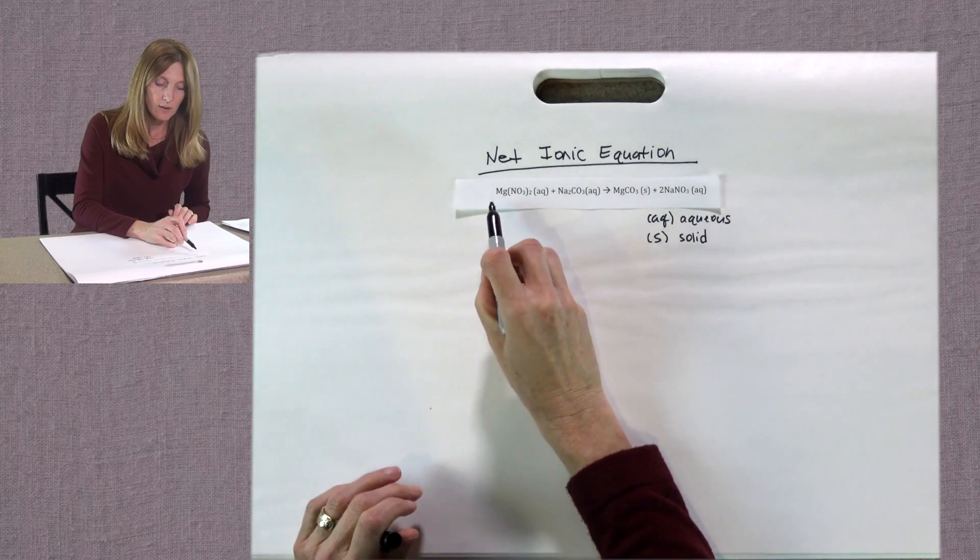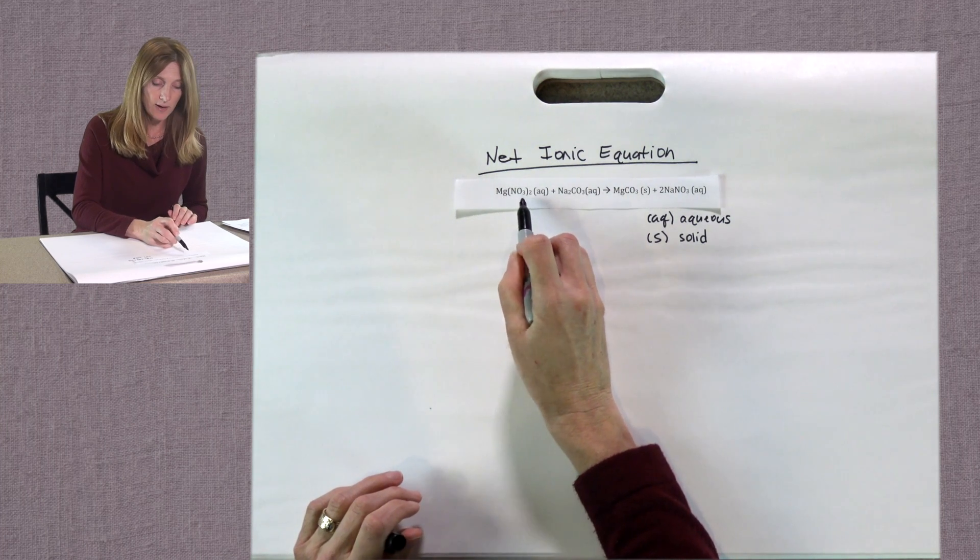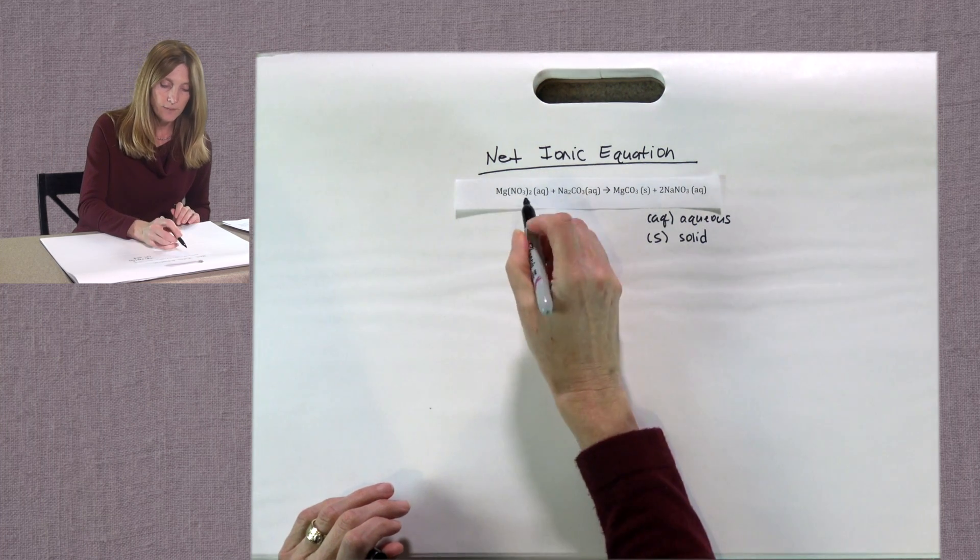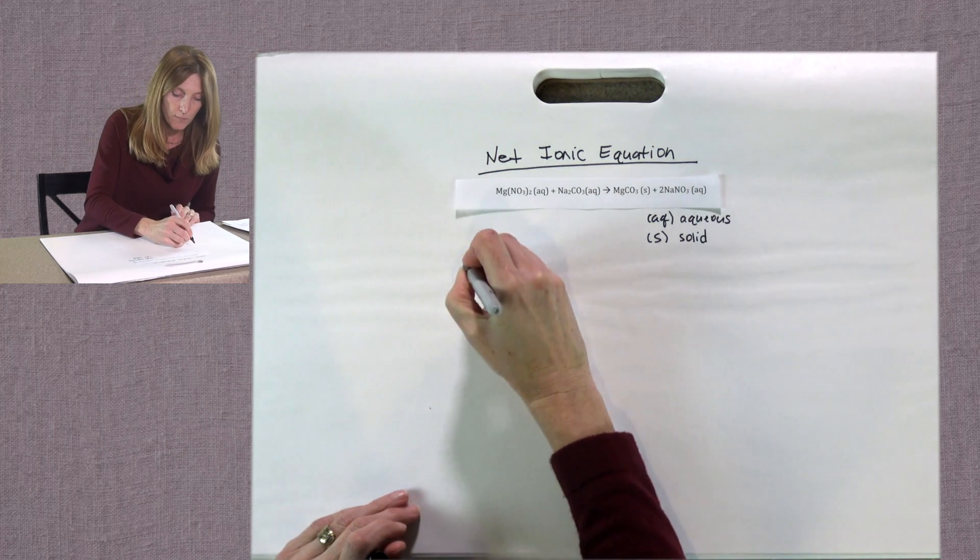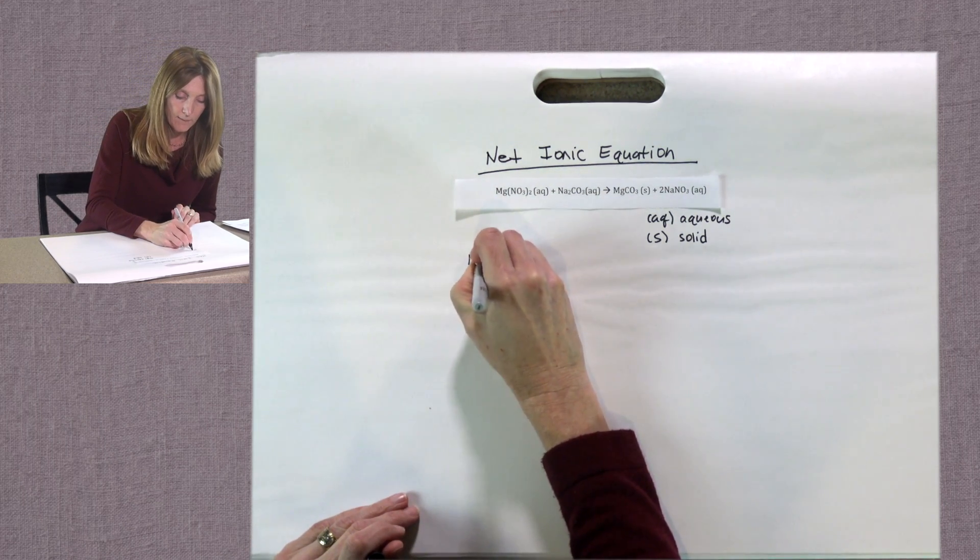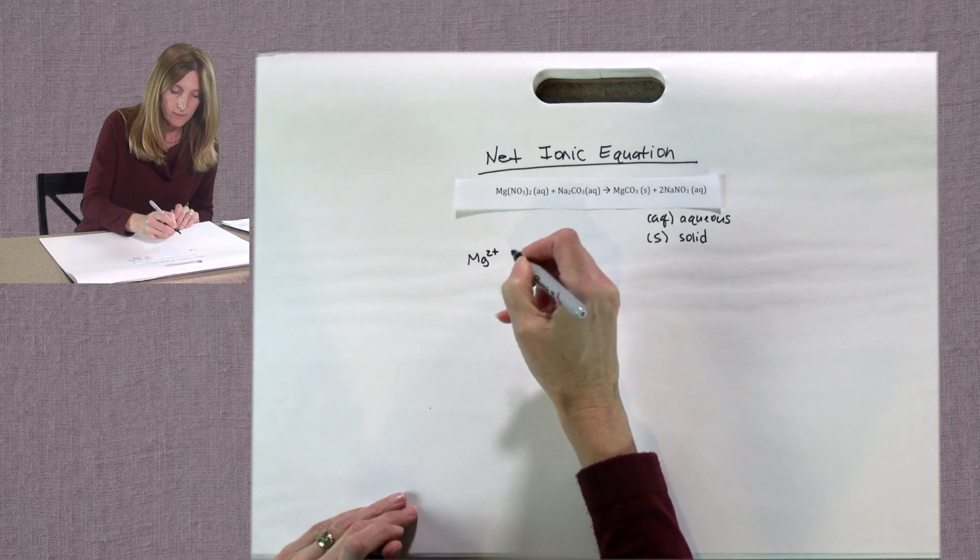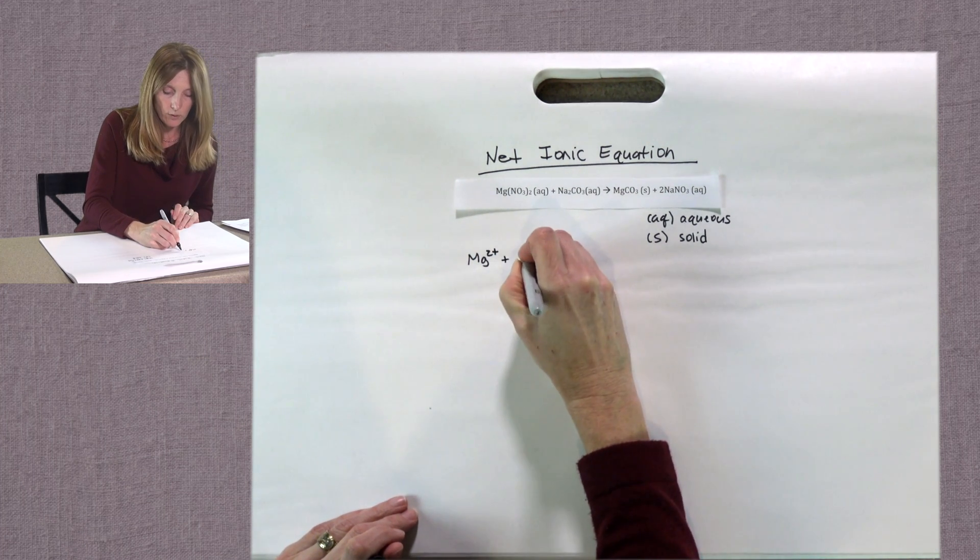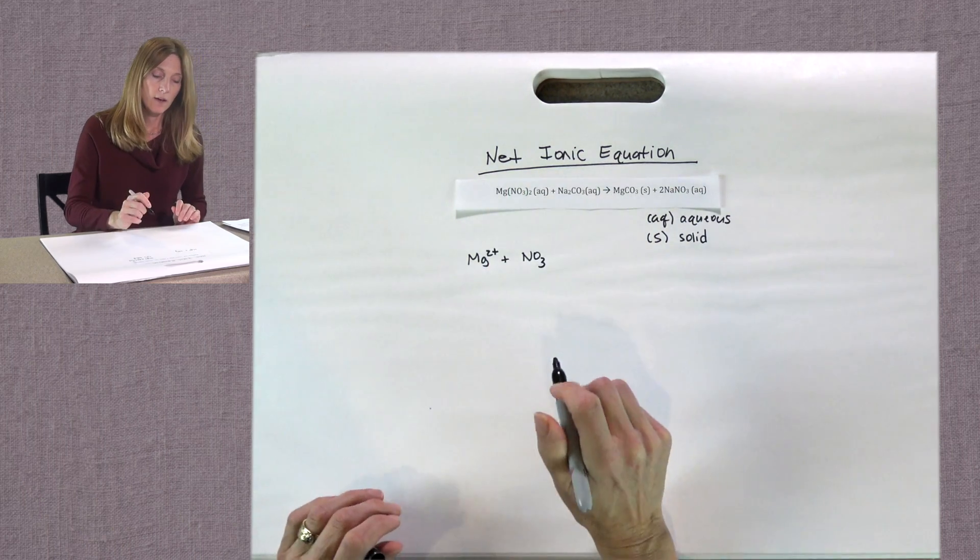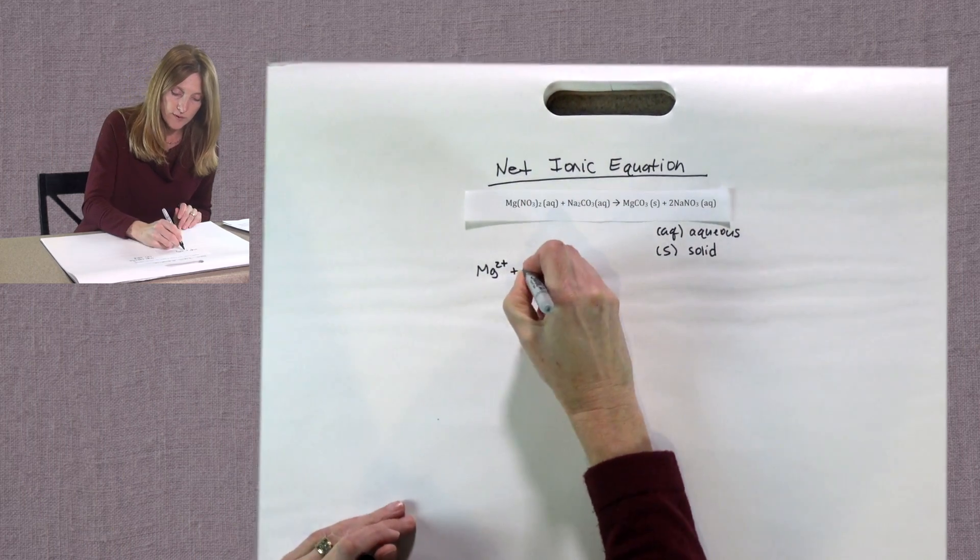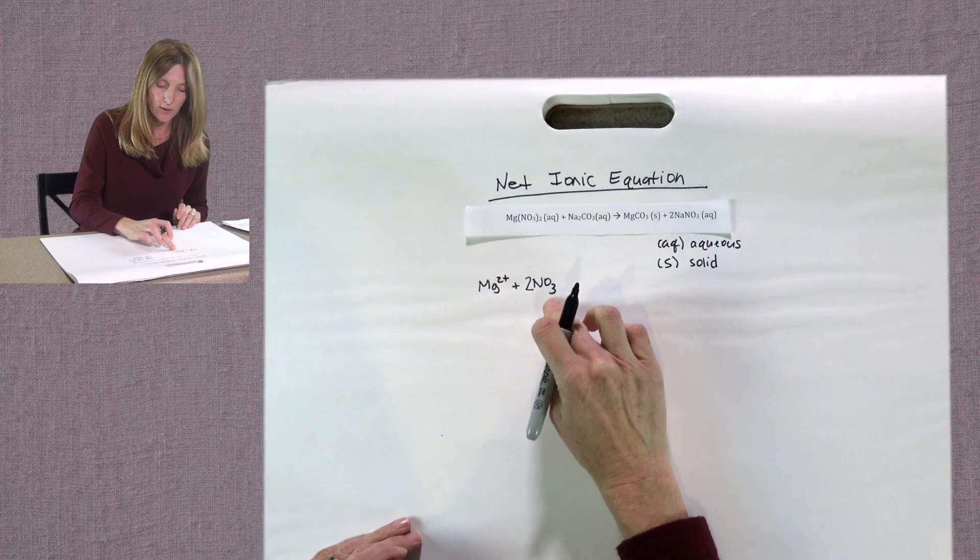So our first compound is magnesium nitrate. Magnesium nitrate is soluble in water as shown by the AQ. So it will come apart and form a magnesium ion and it will also have its nitrate ion. Again, the subscript two shows us that we have two nitrate ions.